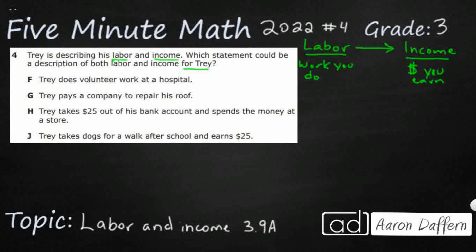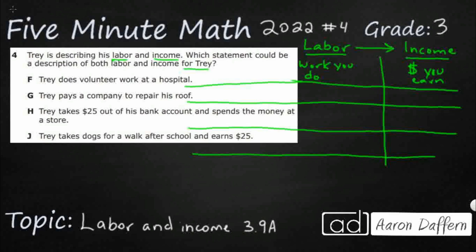All right. So, we need to find labor and income. Let's do this. Let's just make a little table. It's going to be a little bit crooked, but we're going to be fine. Because we need to find labor and income for Trey here.